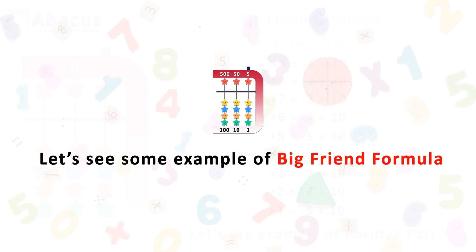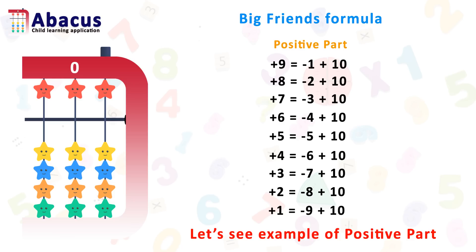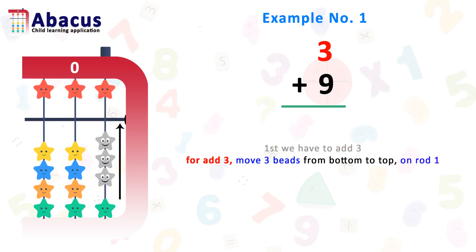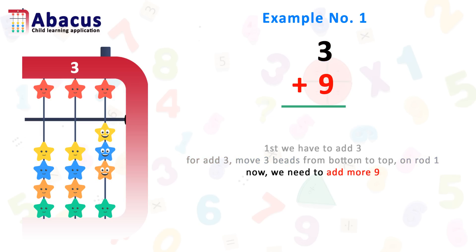So we get a better idea. First we see an example of the positive part. Here is example number 1: 3 plus 9. First we have to add 3. For adding 3, move 3 beads from bottom to top on rod 1. It's easy, right? Now we have to add more 9 beads. Here on rod 1, we already have 3 beads added.